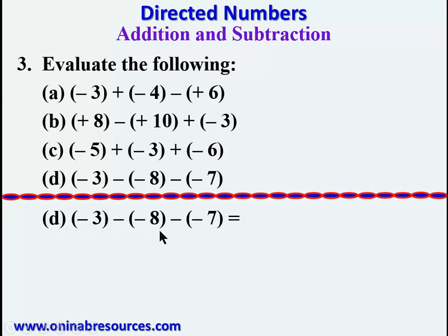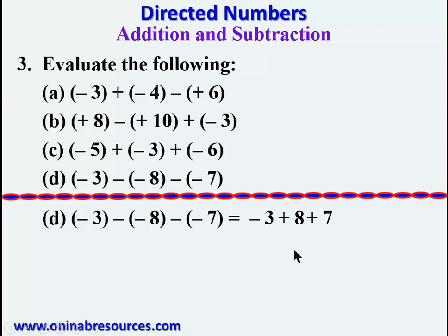For problem 3(d): negative 5 minus negative 8 minus negative 7. We maintain negative 3, and negative times negative gives positive, so we have plus 8; negative times negative gives positive again, so plus 7. Then negative 3 plus 8 gives 5, and 5 plus 7 gives 12. This is the end of the solution to problem 3 and the end of this video.